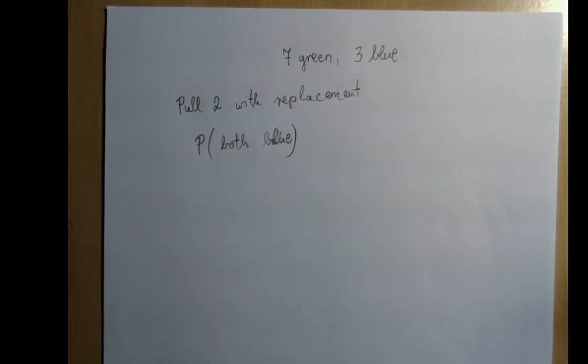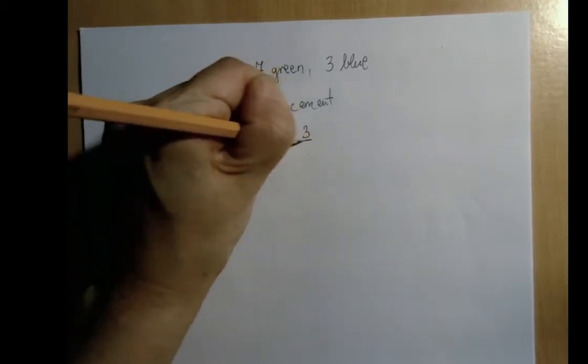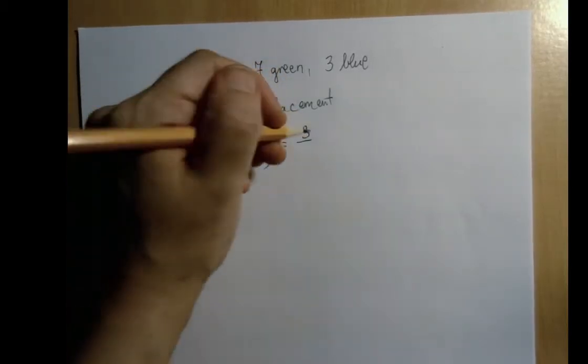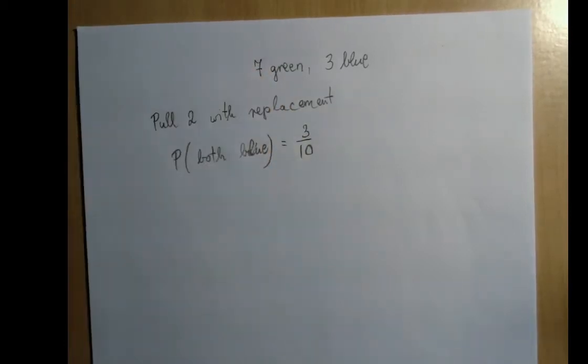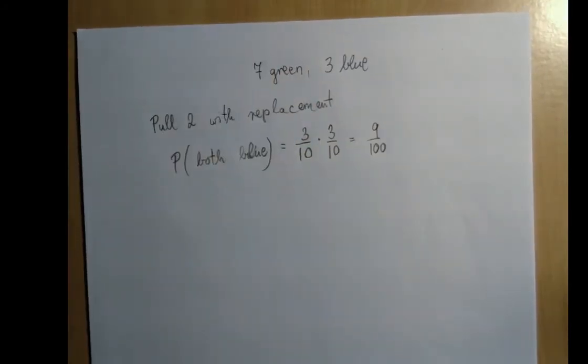What is the probability that they're both blue? The first one is out of the 10, 3 are blue, so our probability of pulling a blue first time is 3 over 10. But then we throw back that ball, so the second one has the same probability, so it's 9%.